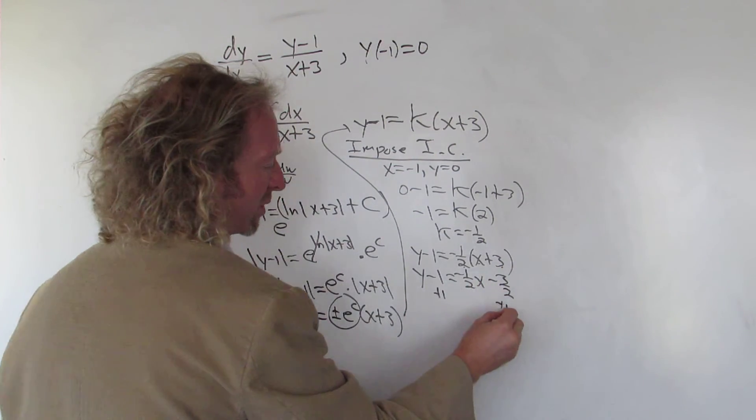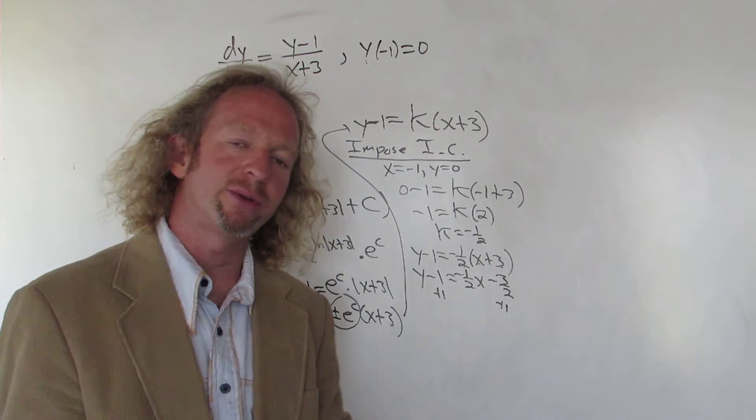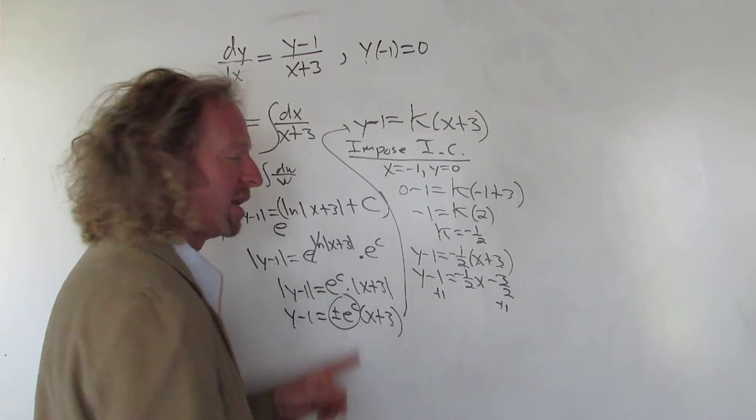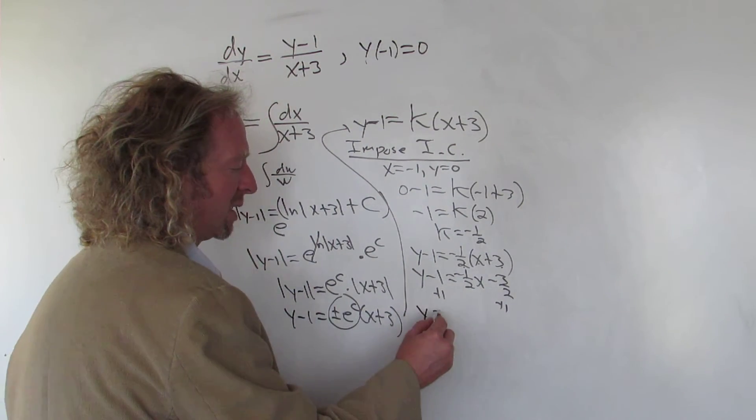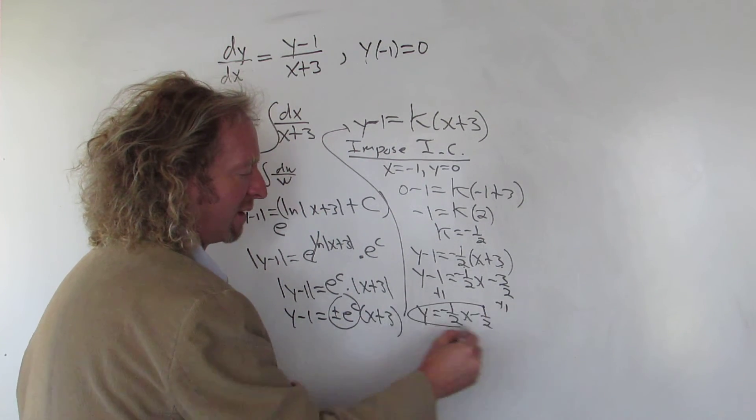When we add one to both sides when solving for y, what we're really doing is adding two over two. So negative three halves plus two halves is negative one half. We end up with y equals negative one half x minus one half. And that would be it.